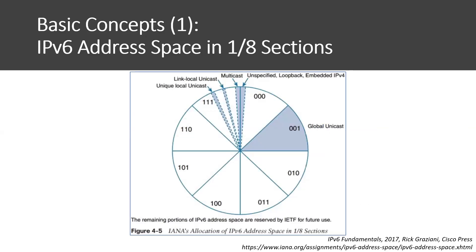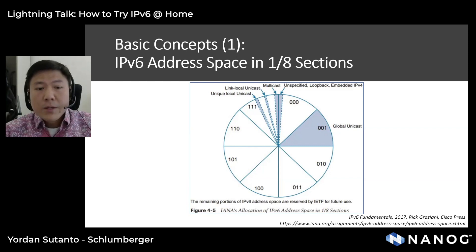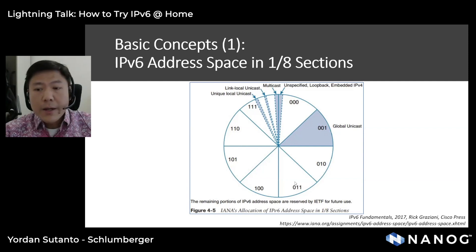Let's start with a brief introduction to IPv6. This is a picture of the IANA IPv6 address space in a pie chart. Approximately 85% of the IPv6 address space is reserved for future definition and use, and it's not to be assigned by IANA. So there are still a lot of available space in the 15% that we are using. This is the breakdown of the pie chart: 000 is used by unspecified, loopback, and embedded IPv4 addresses. 001 is used by global unicast address. 011 is used by the NAT64 well-known prefix. 111 is used by unique local unicast, link-local unicast, and multicast.